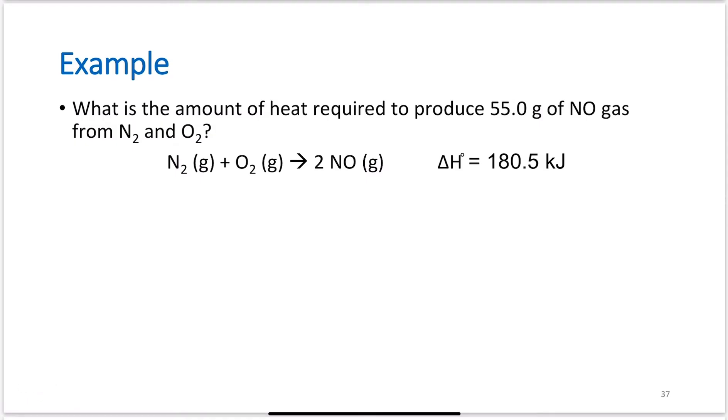Let's go ahead and work a couple examples. What is the amount of heat required to produce 55 grams of NO gas from N2 and O2? So, I want to know the amount of heat. This will be in kilojoules. I am trying to produce 55 grams of NO. So, I know that one mole of NO weighs 30.01 grams. So, just like before, you need to convert to moles. Now, I've got moles of NO, but I know that for every two moles of NO produced, 180.5 kilojoules of energy is required.